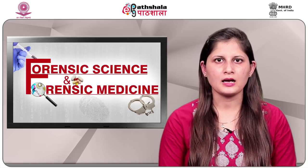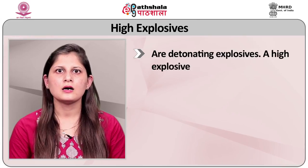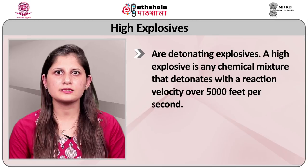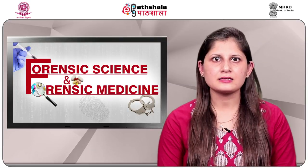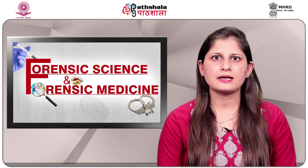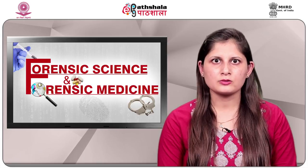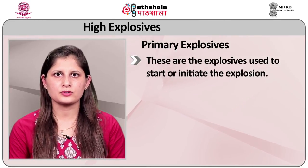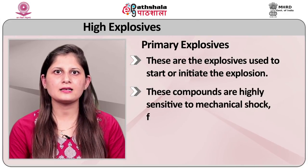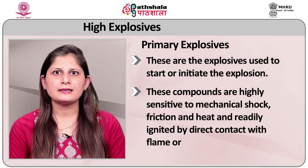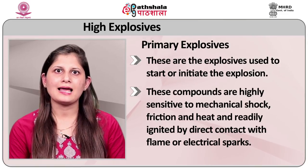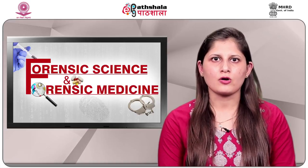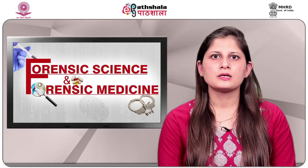High explosives are detonating explosives. A high explosive is any chemical mixture that detonates with a reaction velocity over 5,000 feet per second. High explosives have been subdivided into two groups according to their function in the explosive train: primary explosives and secondary explosives. Primary explosives are the explosives used to start or initiate the explosion. These compounds are highly sensitive to mechanical shock, friction, and heat, and are readily ignited by direct contact with flame or electrical sparks. The main function of primary explosives is to initiate a secondary explosive by shock wave. Because of their sensitivity, they are used in small quantities.